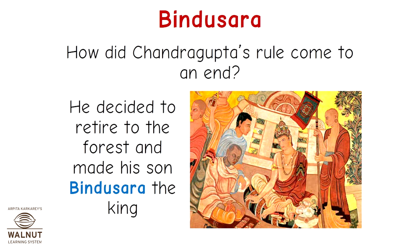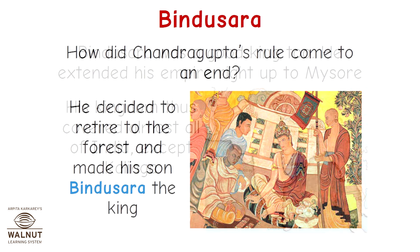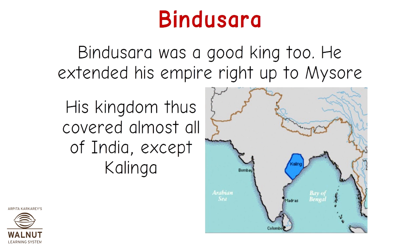How did Chandragupta's rule come to an end? He decided to retire to the forest and made his son Bindusara the king. Bindusara was a good king too — he extended his empire right up to Mysore. His kingdom thus covered almost all of India except Kalinga.